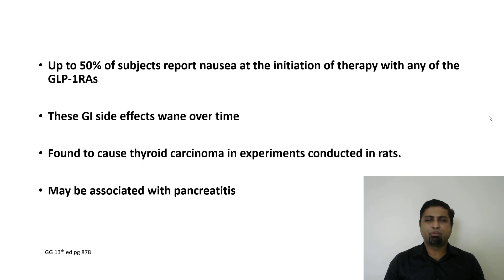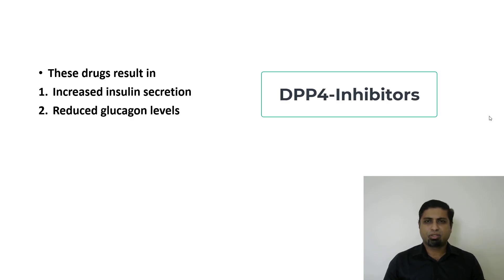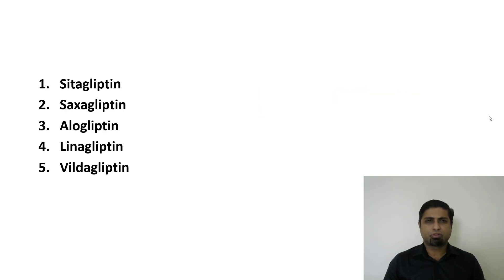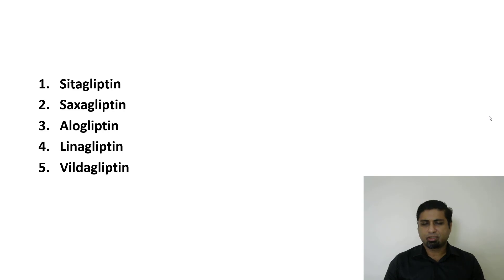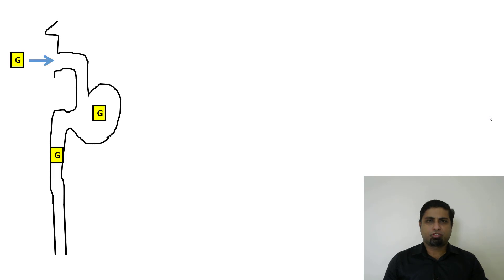Moving on to DPP-4 inhibitors: these drugs result in increased insulin secretion and decreased glucagon production. Examples include sitagliptin, saxagliptin, alogliptin, linagliptin, and vildagliptin. Sitagliptin happens to be the prototype drug in this group.